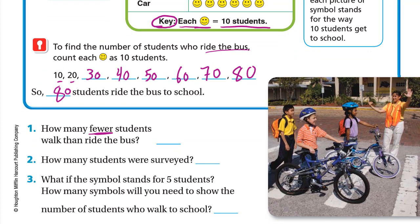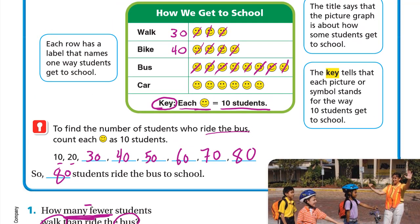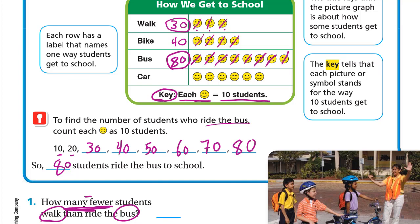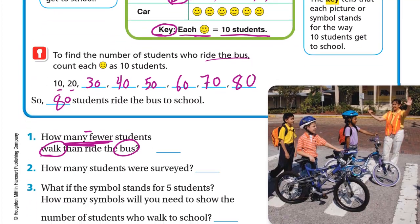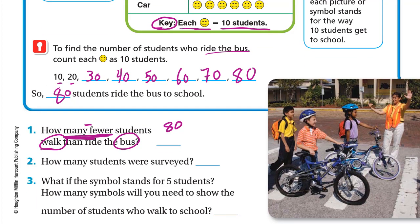How many fewer students walk than ride the bus? If you remember, how many fewer or how many more means we are doing minus. Let's see how many students walk and how many ride the bus. Who walk, we counted: ten, twenty, thirty. And who ride the bus, we counted eighty. So we compare 80 to 30, meaning we subtract 80 minus 30, which is 50.